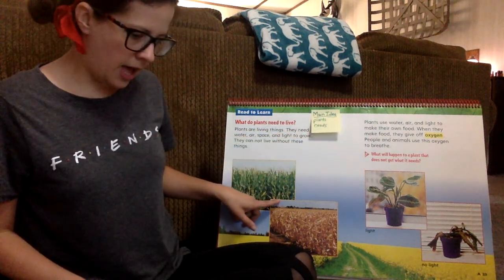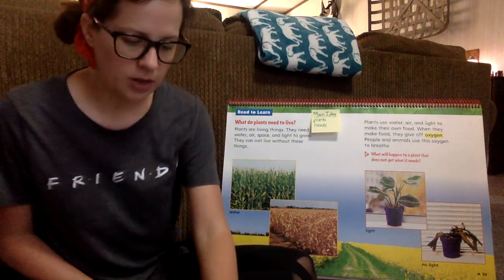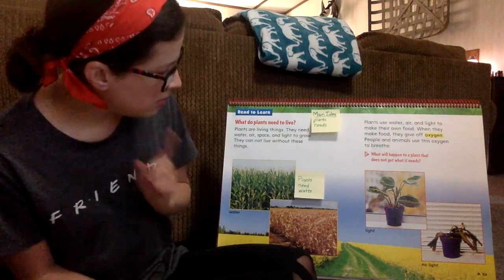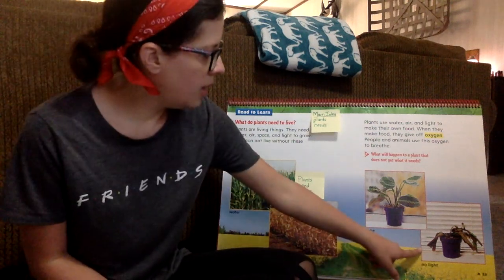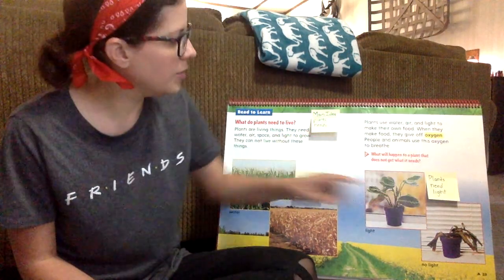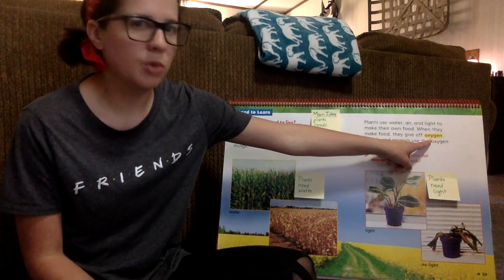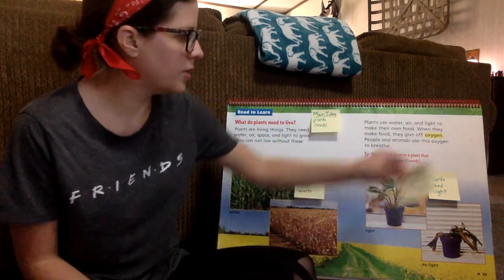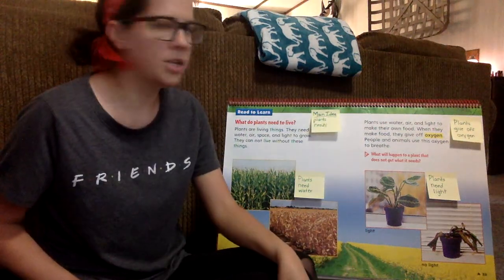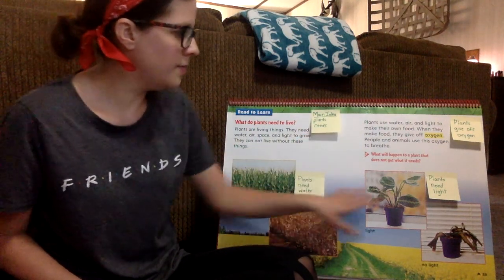Now I need to go back and get three bits of information or three little details about plants' needs. Looking back, this picture said 'water' and this one said 'no water,' so this told me that they need water to live. Plants need water — that's one detail. And then this picture said 'light' and 'no light,' so plants need light to grow — that's detail two. For my third detail, I like this bold word 'oxygen,' so I'm going to write a sticky note that says plants give off oxygen, because that was a really good fact. My main idea is that plants have needs, and my three details are: they need water, they need light, they give off oxygen.